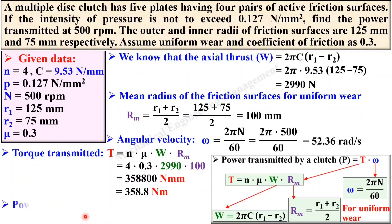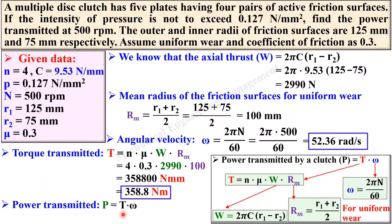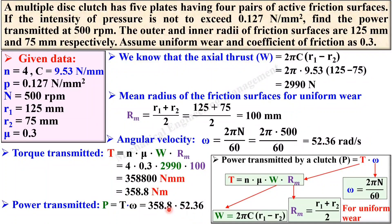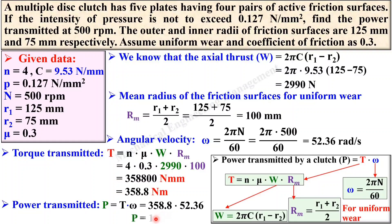Now apply the equation: power transmitted = T × omega. Put the value of T (converted to Newton·meter) and omega = 52.36 rad/s. Simplify it to get the power transmitted — that is your final answer for power transmitted using uniform wear theory.